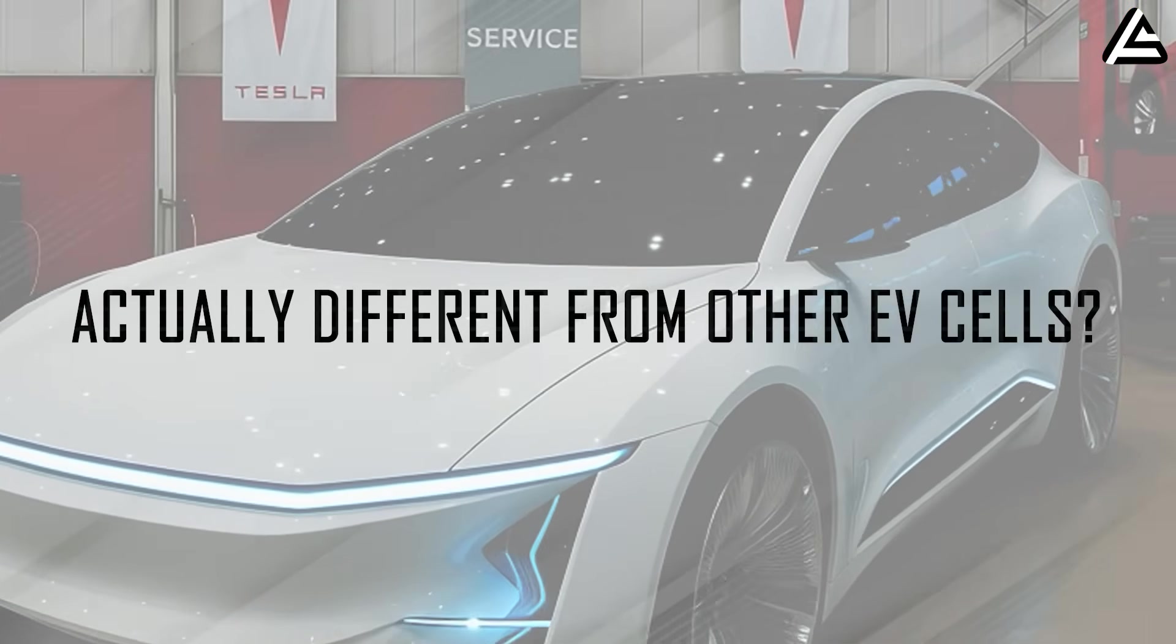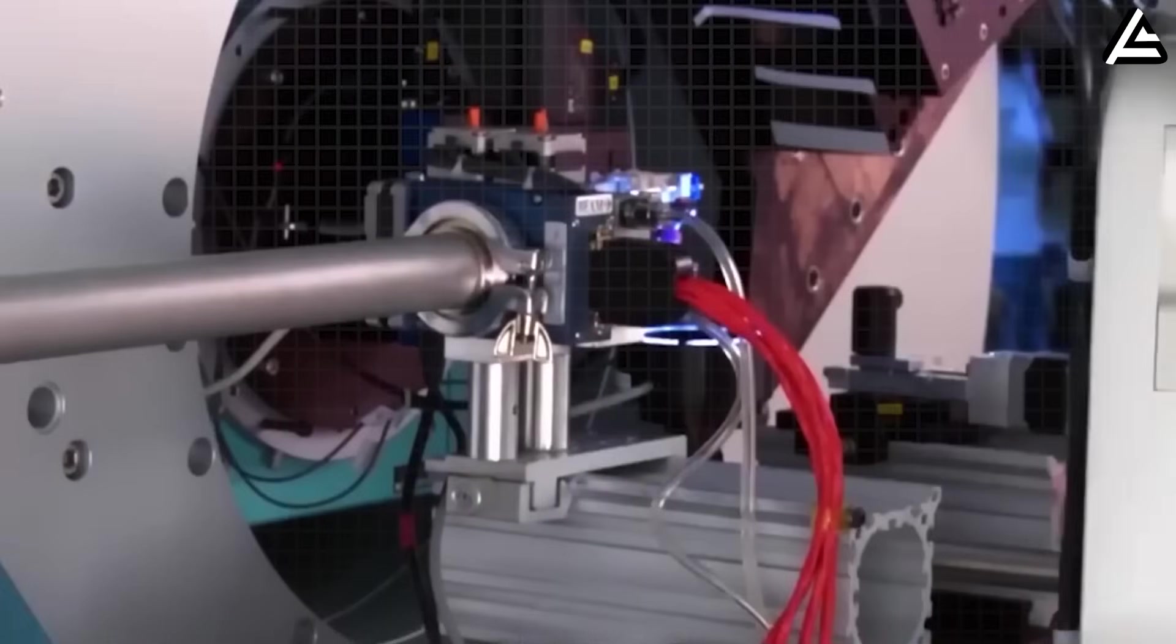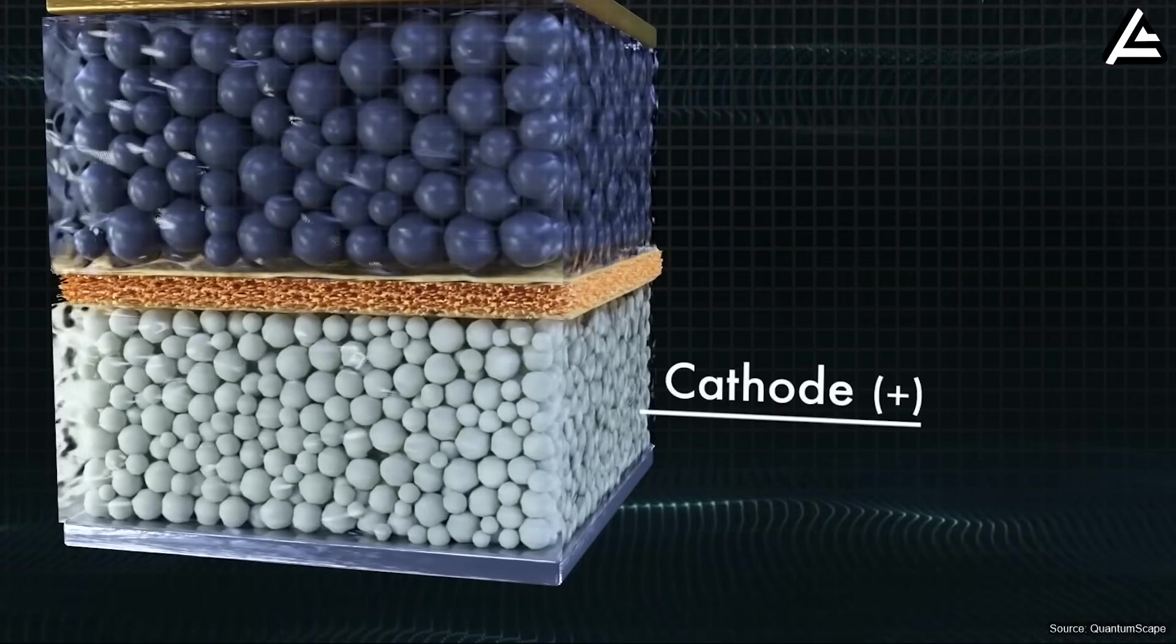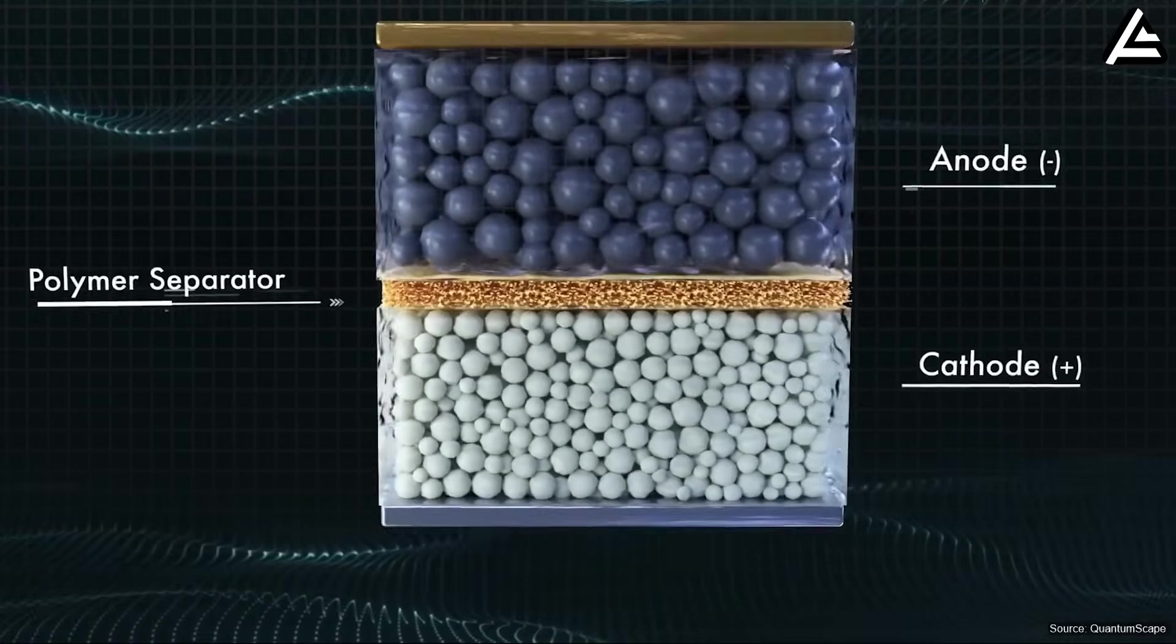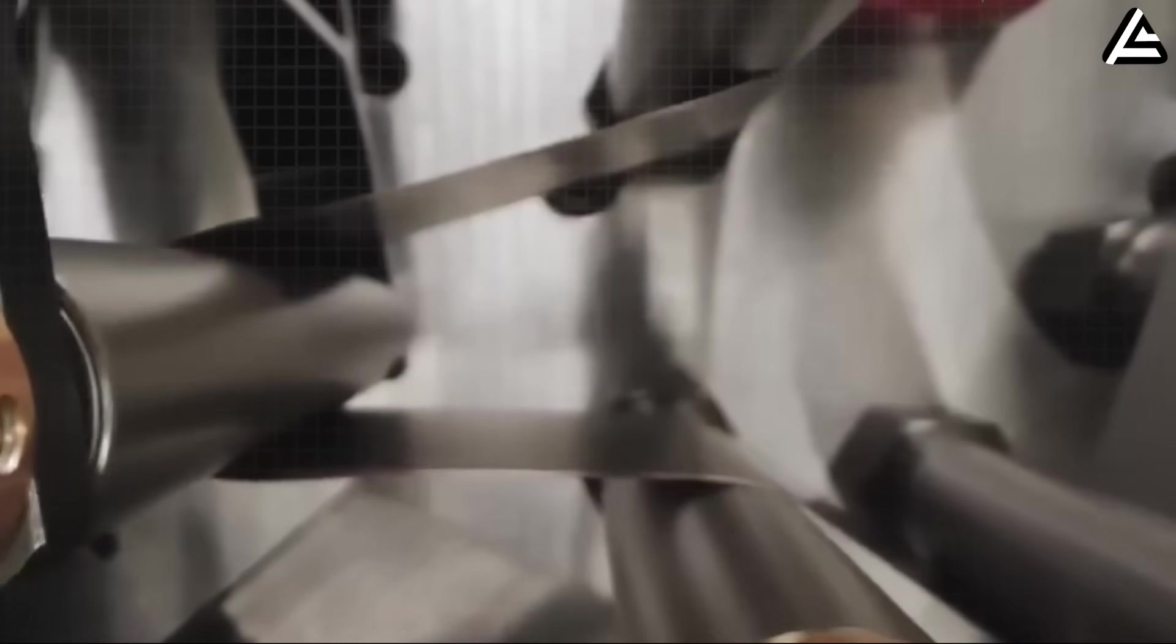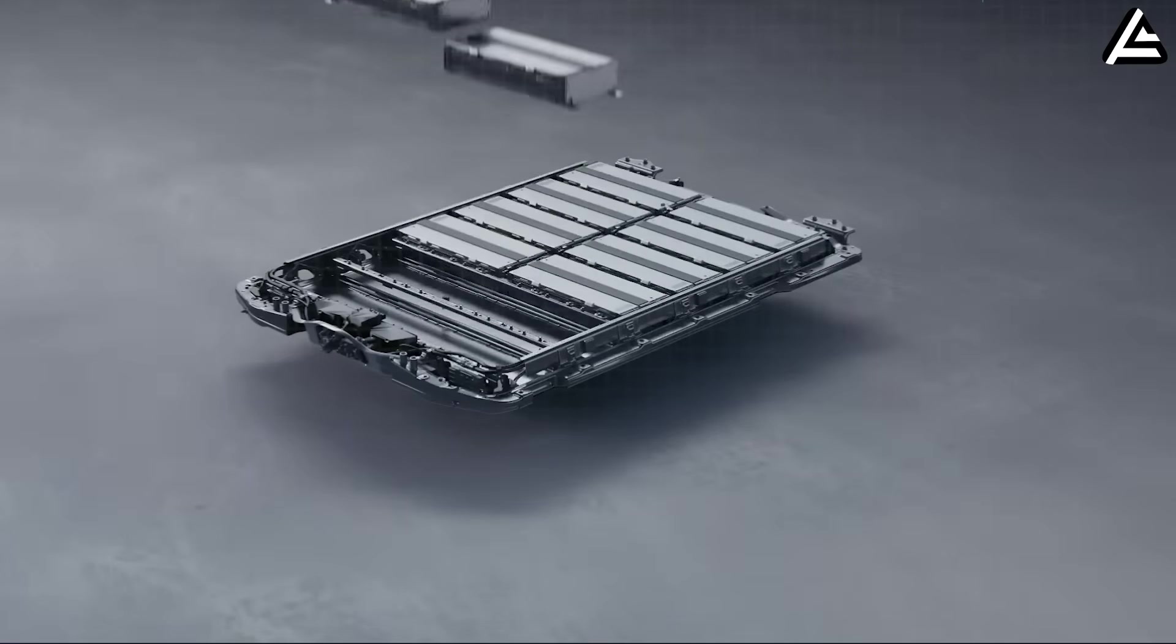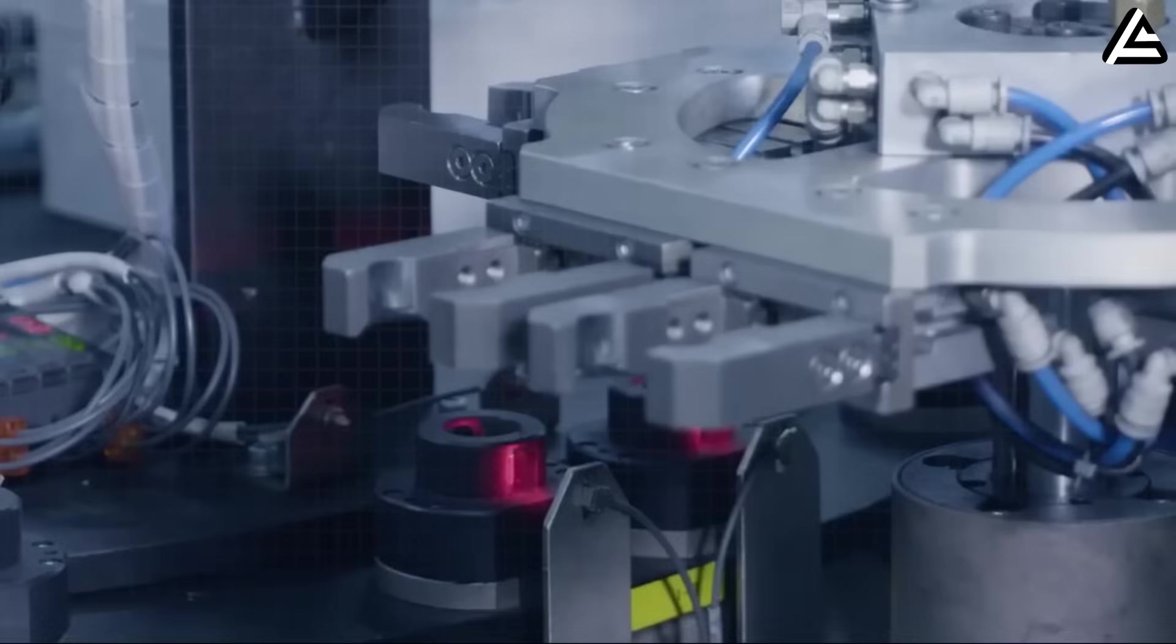How is Tesla's solid-state battery actually different from other EV cells? Tesla's solid-state program represents a major departure from traditional EV batteries and even from the early solid-state prototypes emerging from China. Rather than relying on a simple ceramic electrolyte pouch that performs well only under controlled lab conditions, Tesla is engineering a multi-layer oxide solid electrolyte designed for high-power EV applications and mass production at gigafactory scale on the existing 4680 line. At the heart of Tesla's design is a hybrid anode structure combining a high-lithiation silicon scaffold with a thin lithium-metal layer that forms during the first charge cycle.